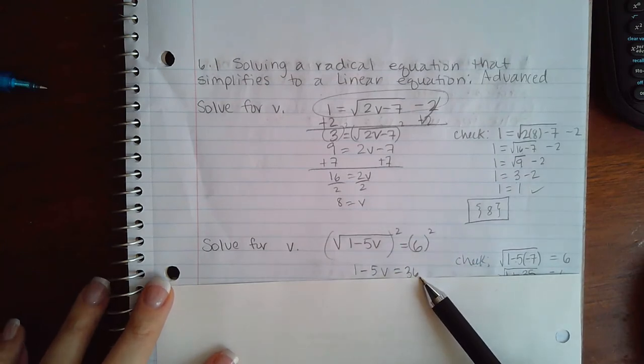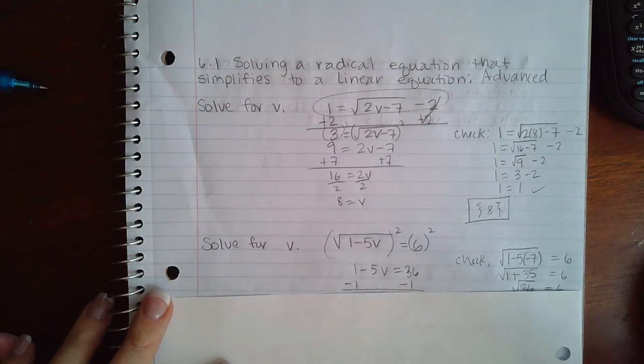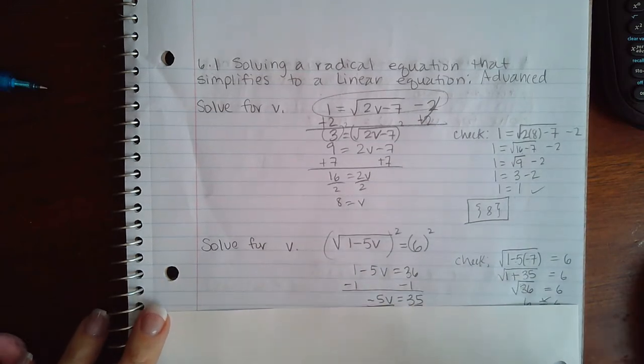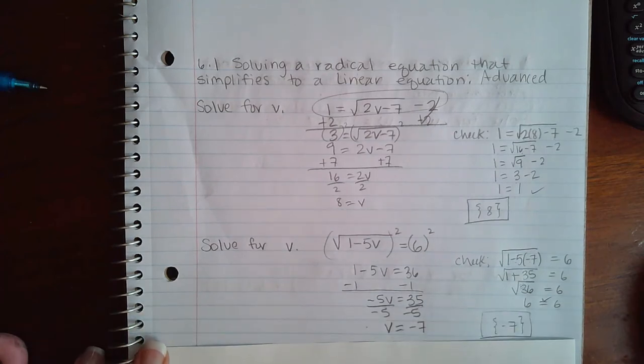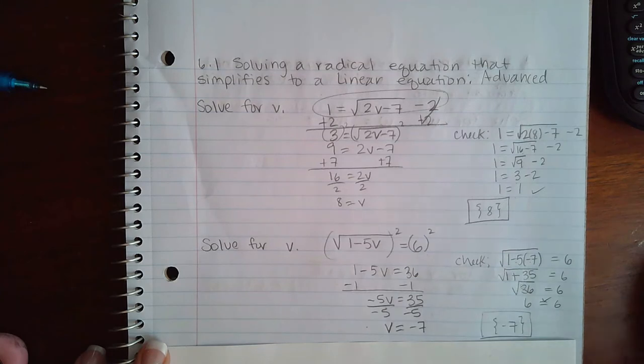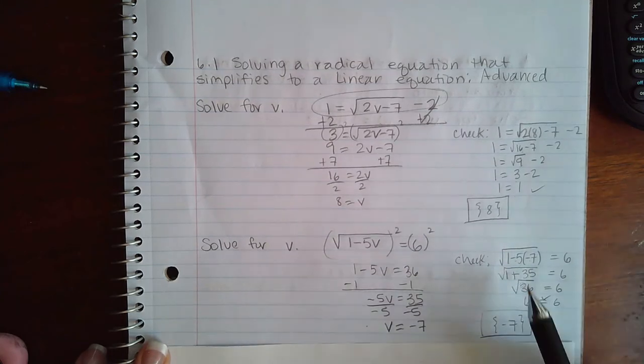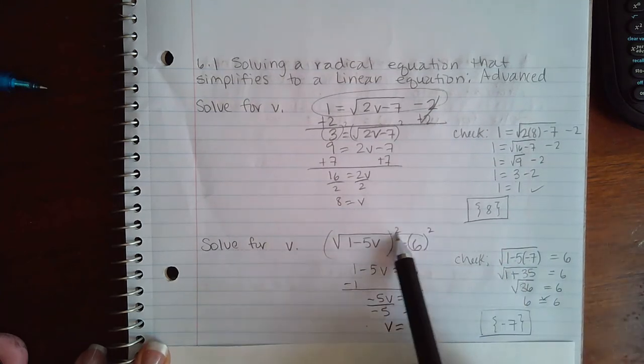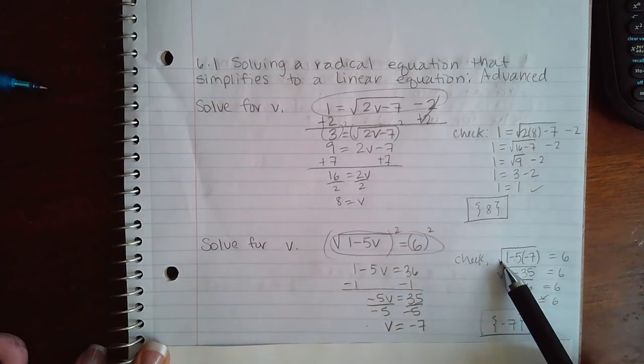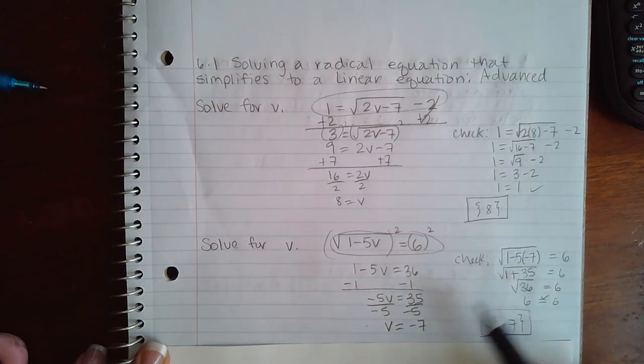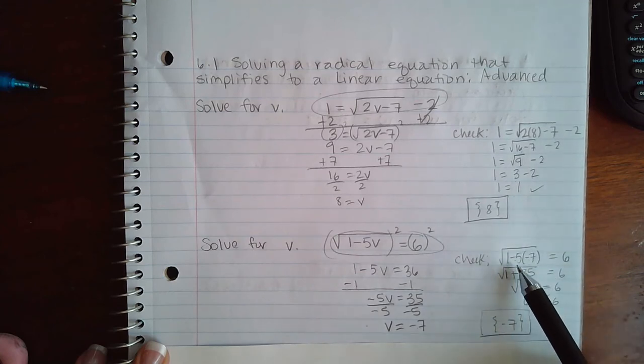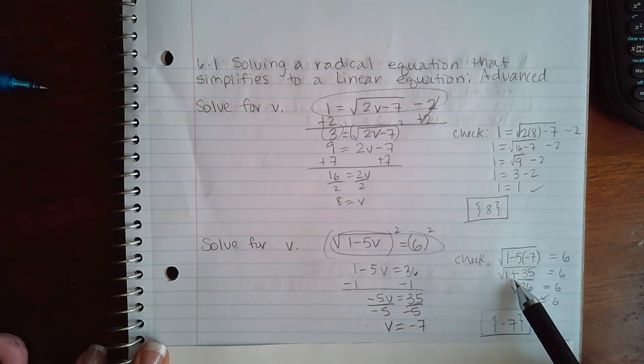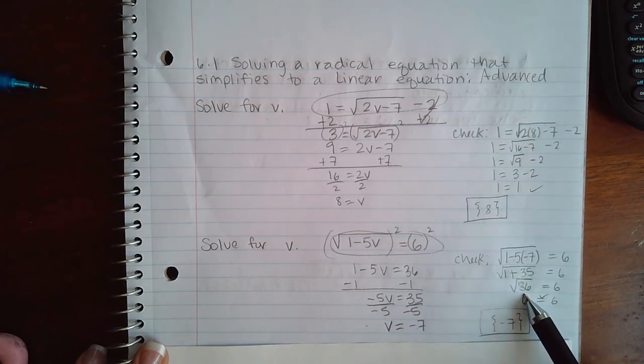So I minus 1 on both sides to continue to solve for v, and then divided by negative 5 on both sides. I arrived at the answer negative 7. So then I plugged into the original problem: square root of 1 minus 5 times my v value negative 7 equals 6. Negative 5 times negative 7 turned out to be positive 35, 1 plus 35 is 36, the square root of 36 is 6. So this solution did check out, and therefore negative 7 is the answer.